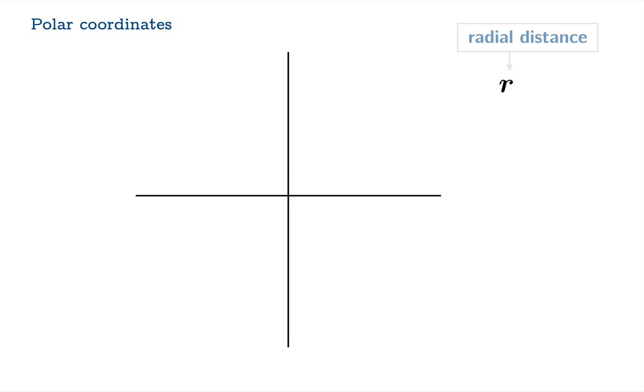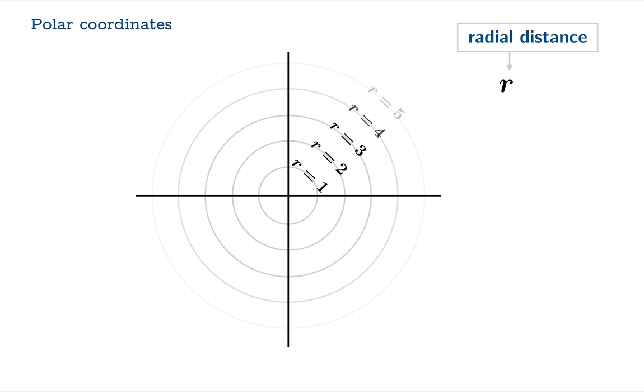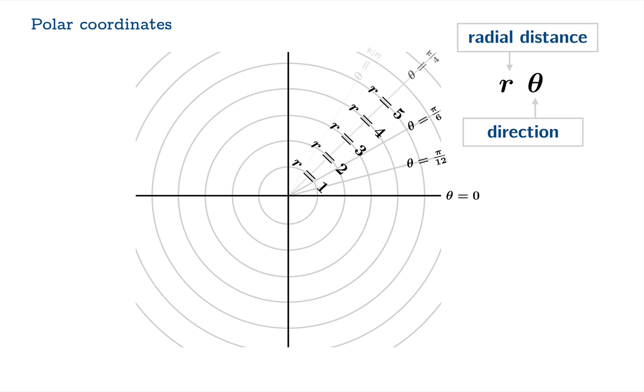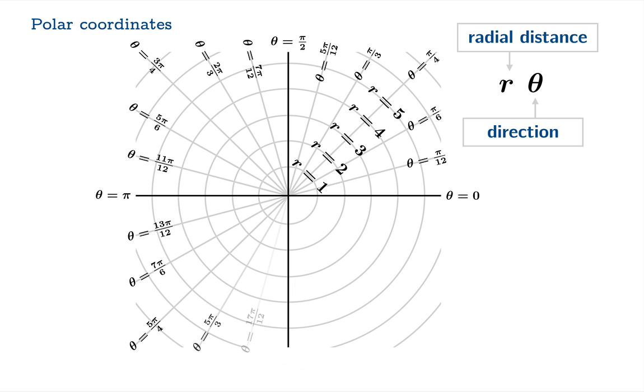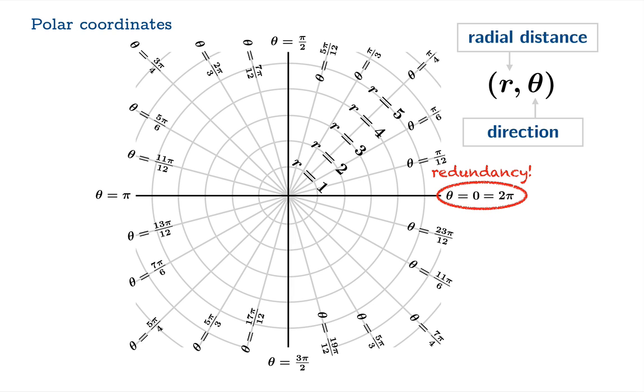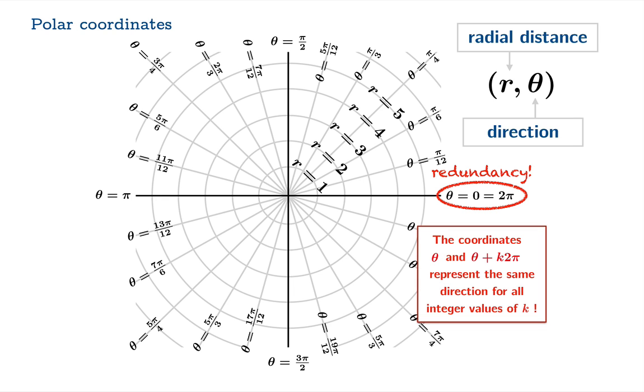So we could let r stand for the radial distance from the origin, and we could let theta represent a direction as measured from the positive x-axis moving counterclockwise, and we're going to measure in radians. Now we'll notice that the positive x-axis could be described either as theta equals 0 or as theta equals 2π. So there's a redundancy here, but actually there's a redundancy everywhere. The coordinates theta and theta plus k·2π represent the same direction for all integer values of k.